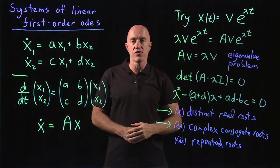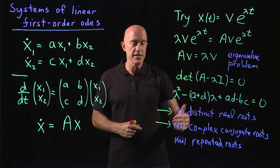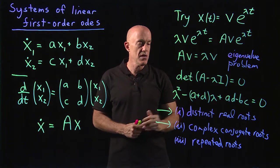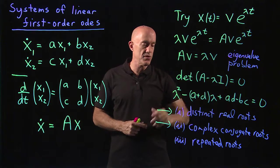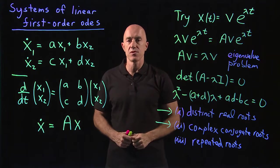The characteristic equation for lambda is just the determinant of A minus lambda I equals zero. And because it's a quadratic equation, we could consider three separate cases. In this course, we'll only consider the first two. What does the solution look like when you have distinct real roots? And what does the solution look like when you have complex conjugate roots?